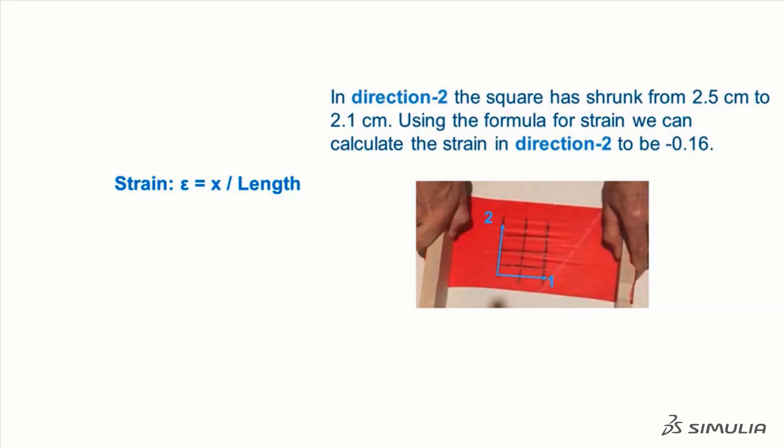In direction 2, the square has shrunk from 2.5 cm to 2.1 cm. Using the formula for strain, we can calculate the strain in direction 2 to be minus 0.16.